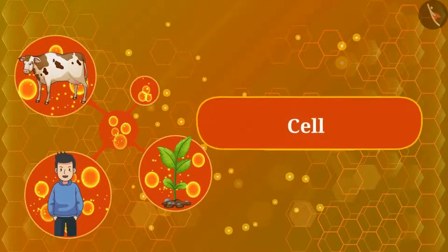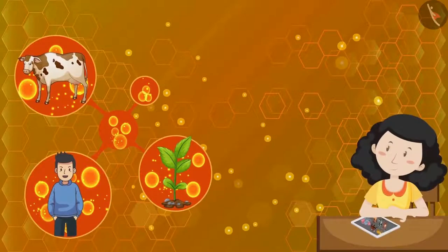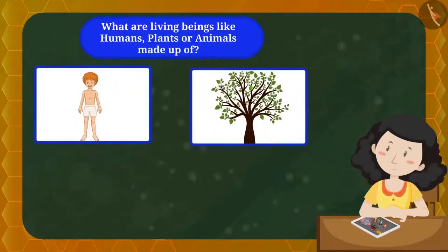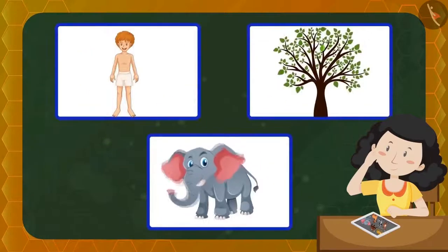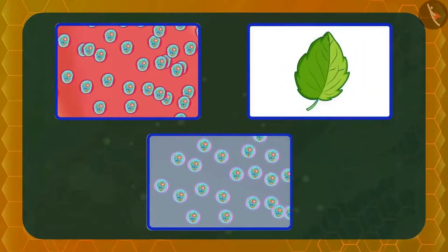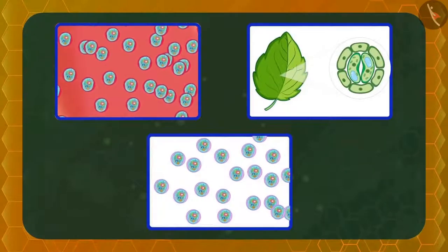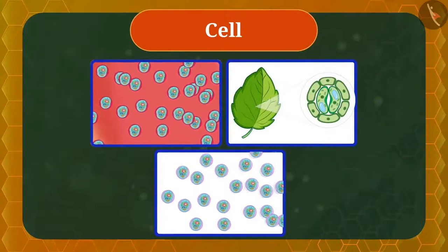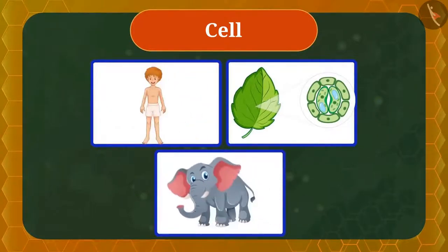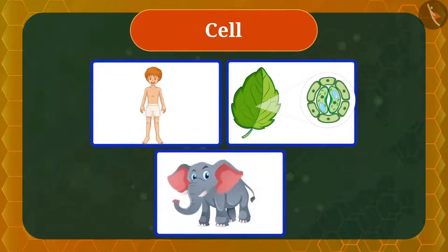Today in this video we will learn about cells. Have you ever thought what living beings like humans, plants, or animals are made up of? If we zoom into these living creatures, you can see small compartments. These compartments are called cells. All living beings are made up of cells, and the cell is the smallest unit from which all living beings are made.